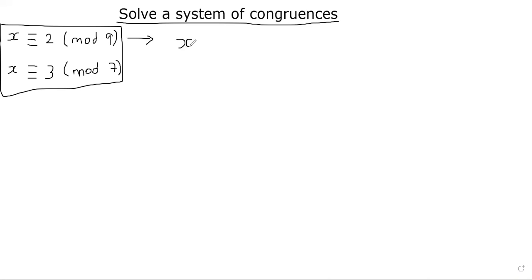This x must be some multiple of 9 plus 2. So let's say 9y plus 2, and y is some integer. It can be negative also. So x is basically 9 times y plus 2. That's the meaning of x congruent to 2 mod 9.